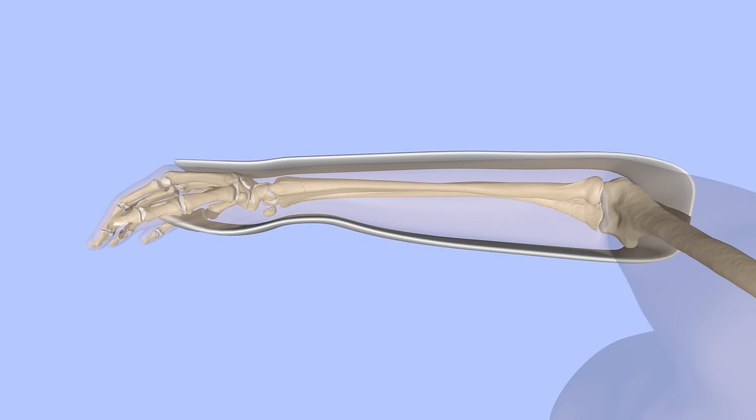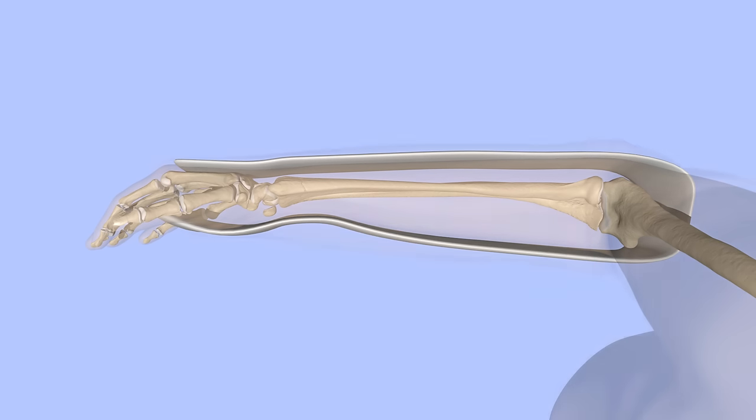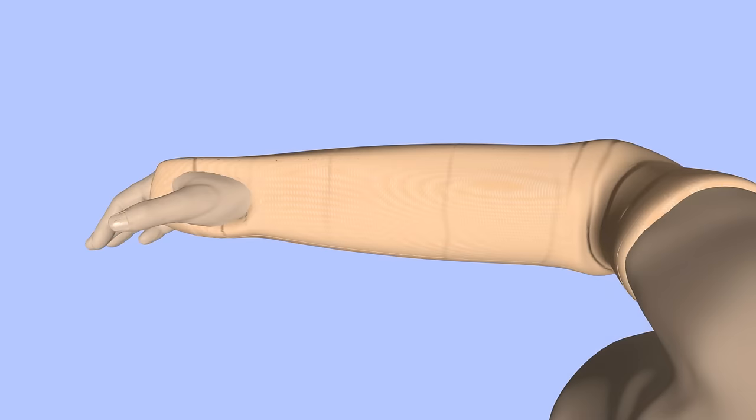When the cast or splint has been applied, x-rays should be obtained to confirm that the fracture is well aligned.